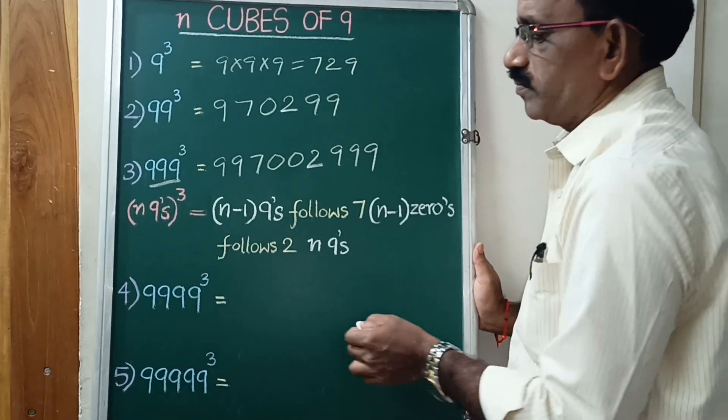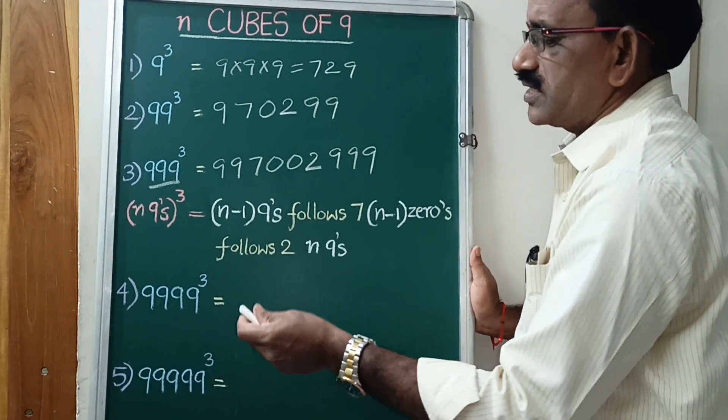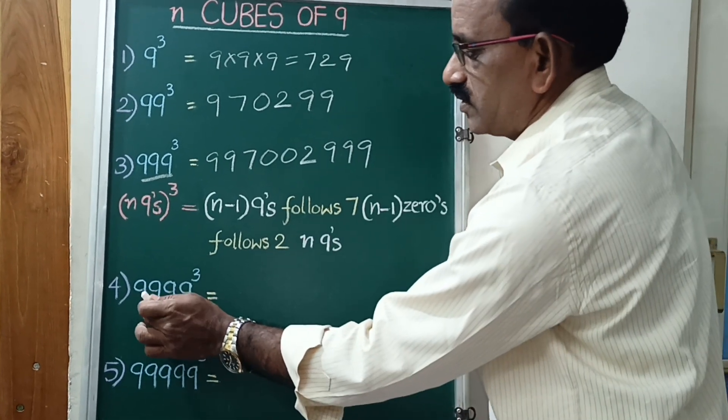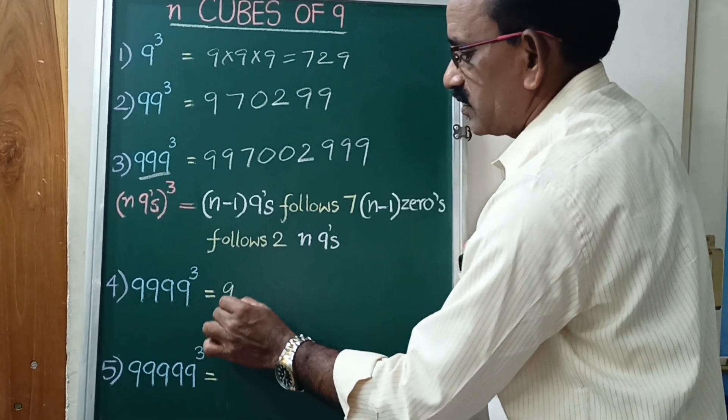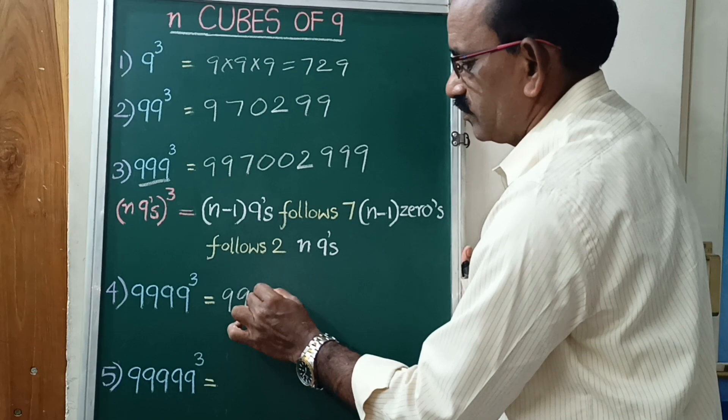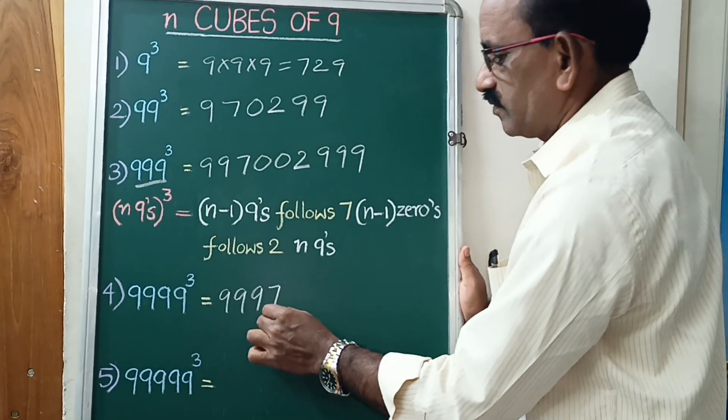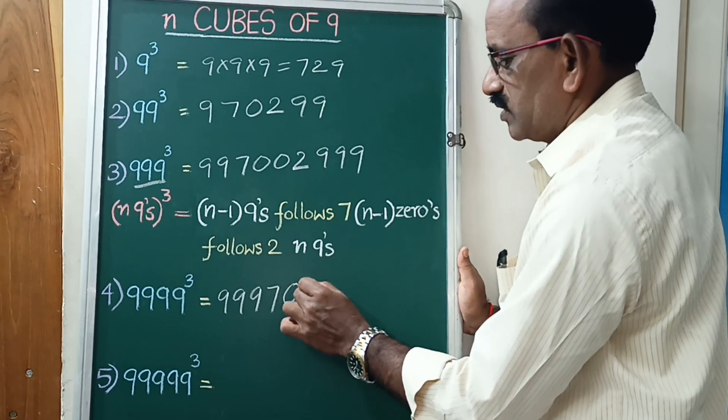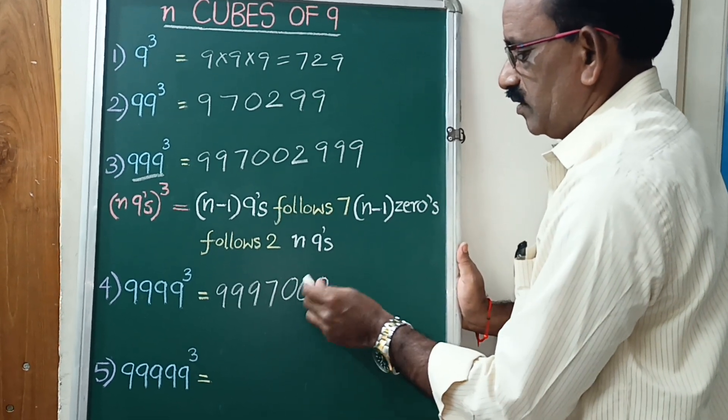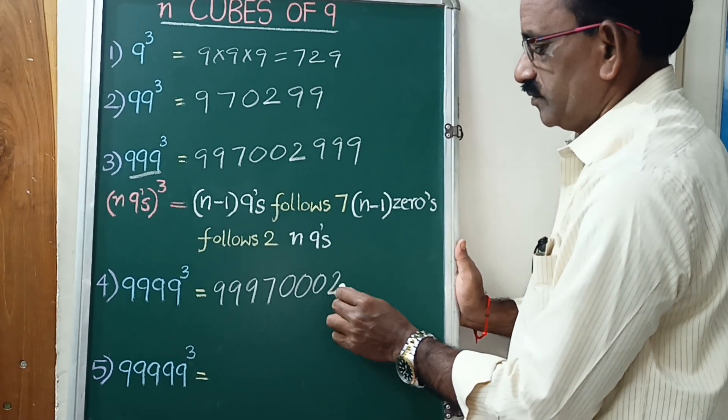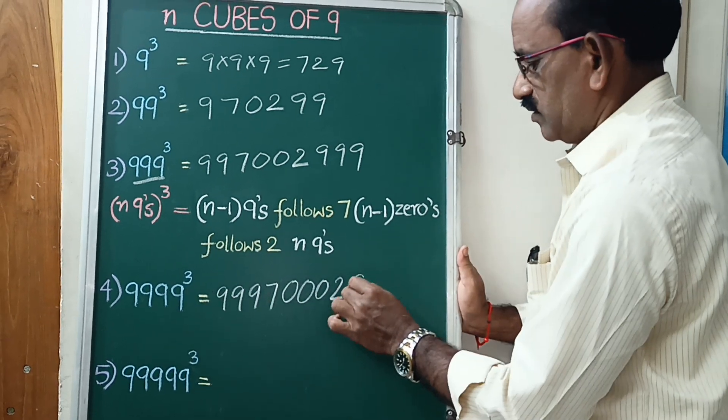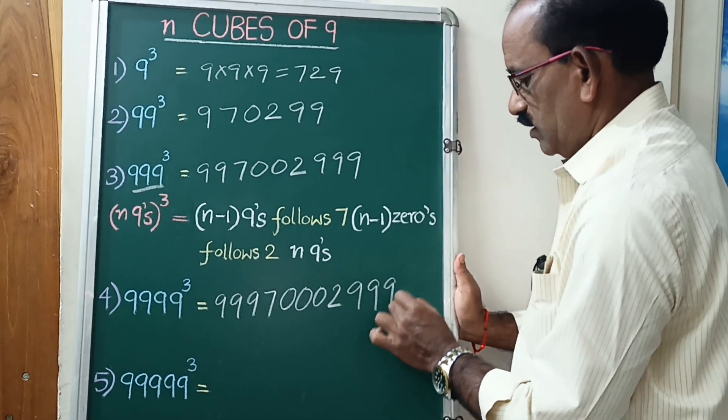Next, 9999 cube. 9999 cube: 3 9's, 3 0's, follows 2. Next 4 9's: 1, 2, 3, 4.